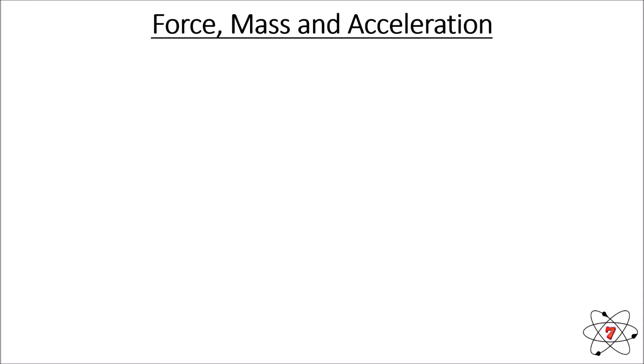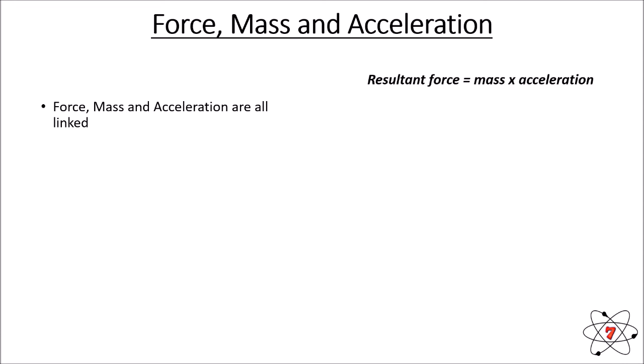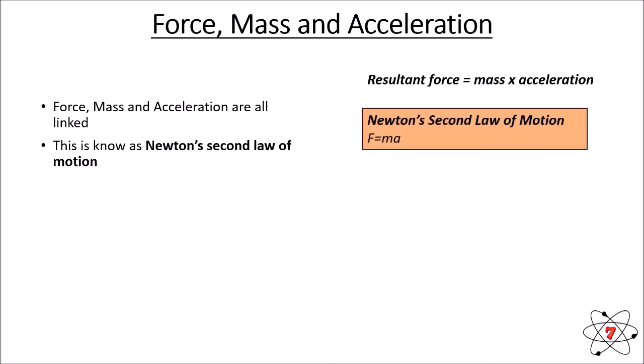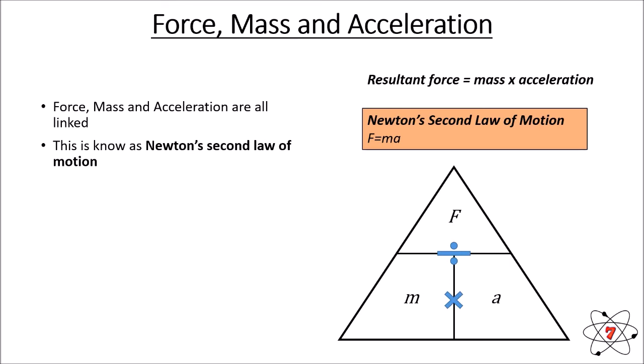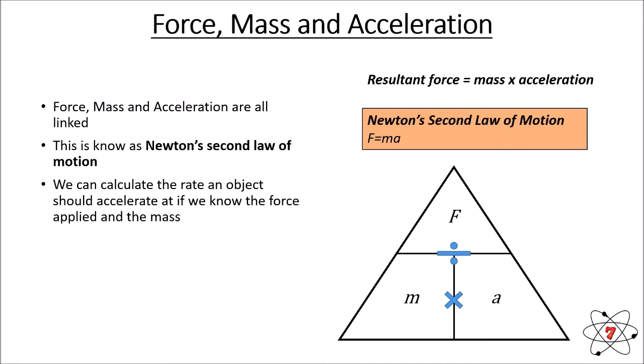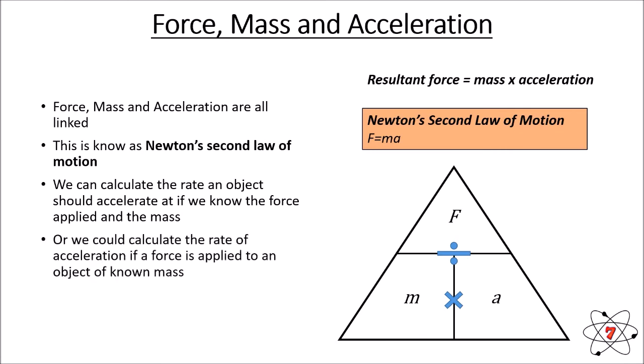Forces and resultant forces link into mass and acceleration — force, mass, and acceleration are all linked together. Resultant force is equal to the mass of something multiplied by its acceleration. This is known as Newton's second law of motion, and it can be summed up as F equals MA, or force equals mass times acceleration. We can put this into an equation triangle. We can calculate the rate an object should accelerate if we know the force applied and the mass of an object.